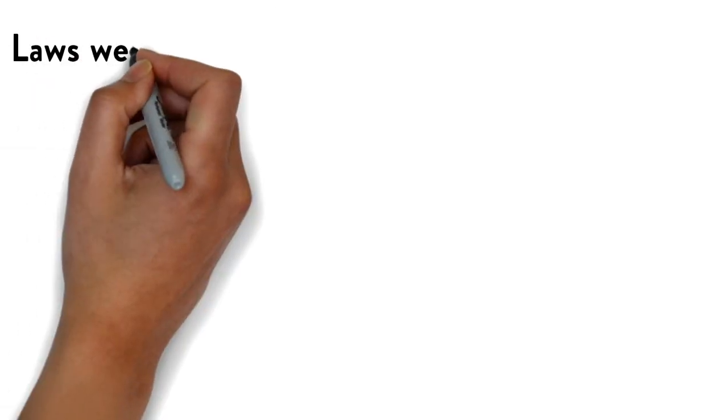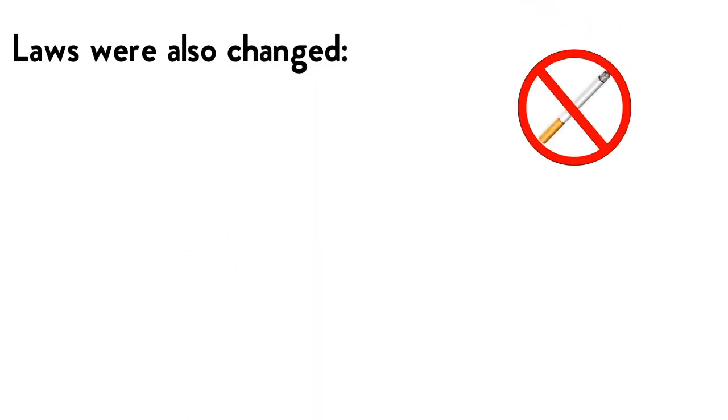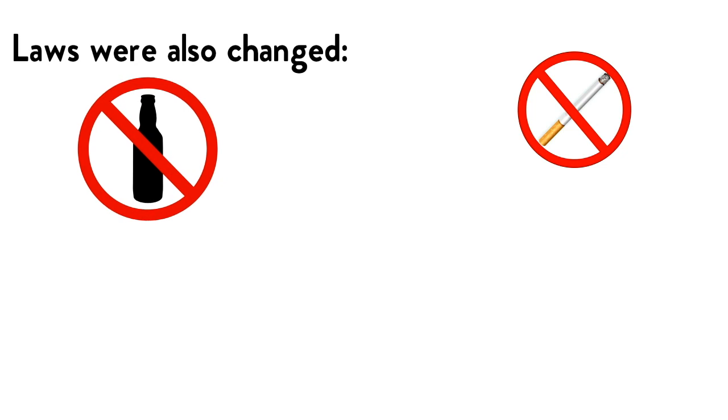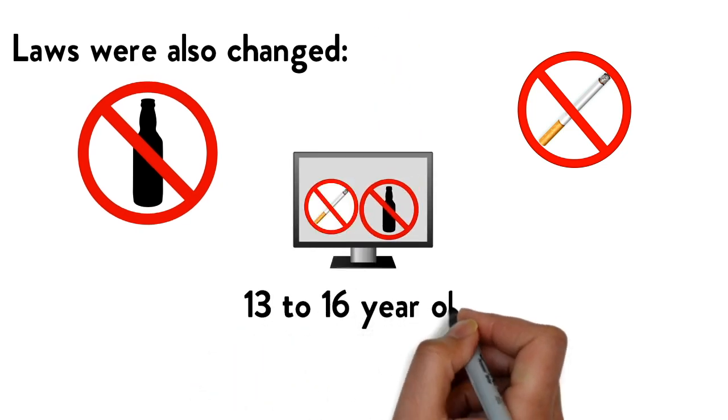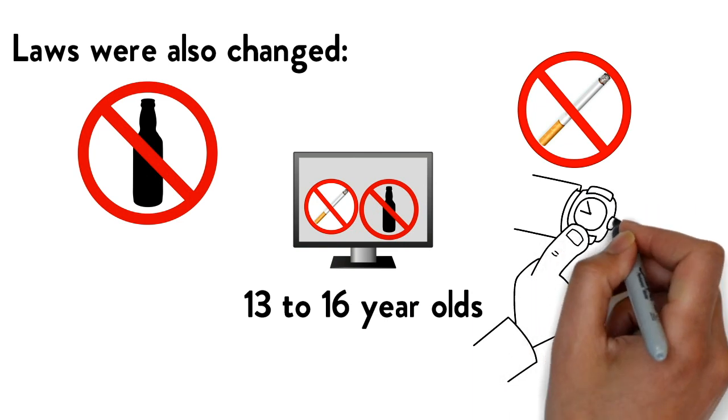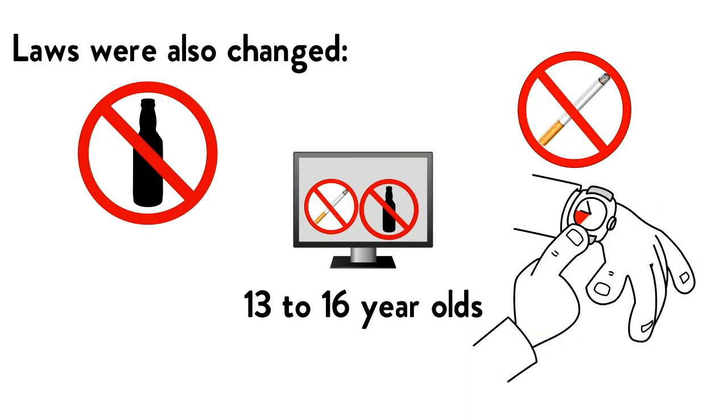Laws were also changed. Buying tobacco under 18 became illegal. Buying alcohol under 20 became illegal. Tobacco and alcohol advertising was banned. 13 to 16 year olds were forbidden from being outside after 10pm in winter and midnight in summer.